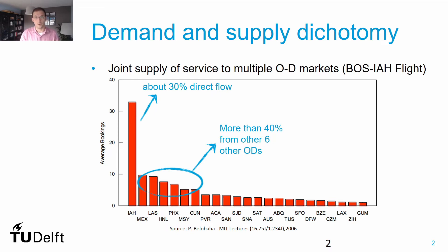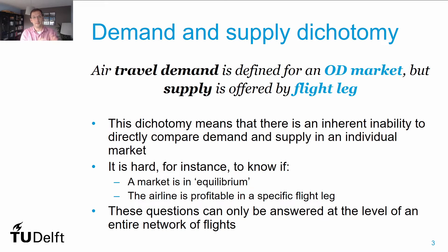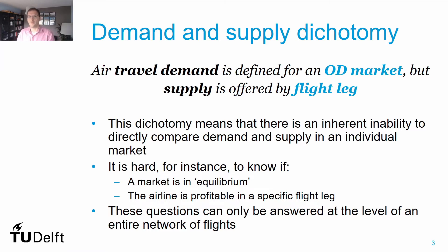This creates a problem: because we have air travel demand defined at the OD level, and supply defined at the flight leg level, it is hard to compare both demand and supply. We call this the demand and supply dichotomy. This makes it hard to know if a market is in equilibrium, if the airline is profitable on a specific flight leg, or if we should offer more capacity on a specific flight leg.